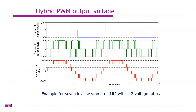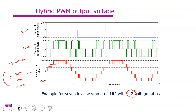This is known as the hybrid PWM technique, which is especially used for asymmetrical multilevel inverters — in this case a 1:2 ratio inverter. This one is producing 10V, and this is producing 20V, giving 30V peak value. Therefore you get a seven-level output — varying from plus 30 to minus 30 — with two H-bridges.